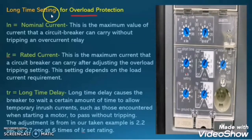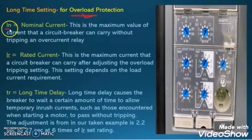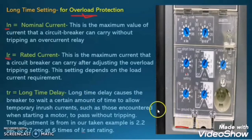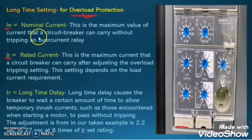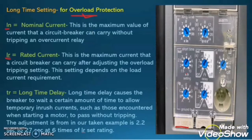The long time setting gives protection against overload. But before understanding long time setting, we need to understand what is nominal current and what is rated current. Here in our example, IN is equal to 4000A. The IN is the nominal current — this is the maximum value of current that the circuit breaker can carry without tripping an overcurrent relay, meaning this breaker can carry a maximum of 4000A.